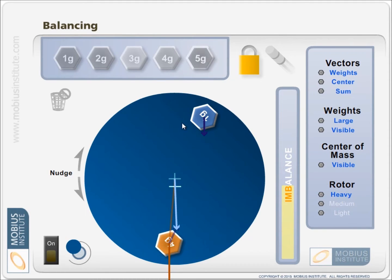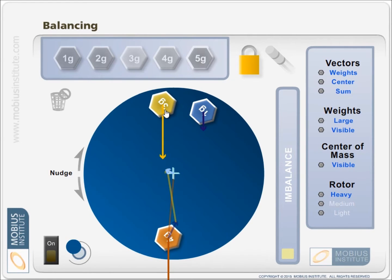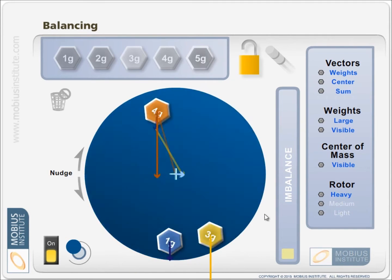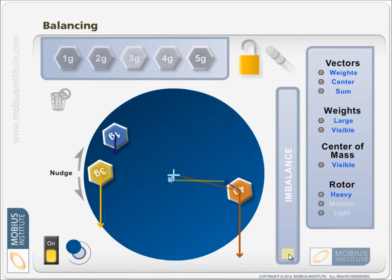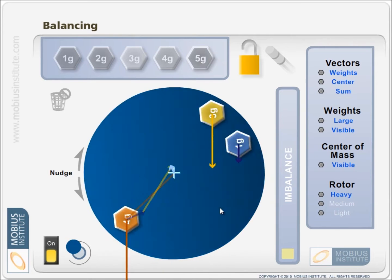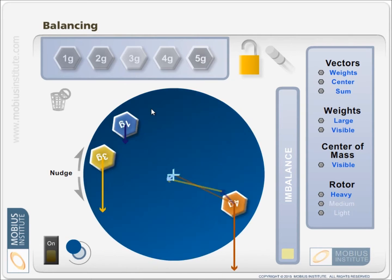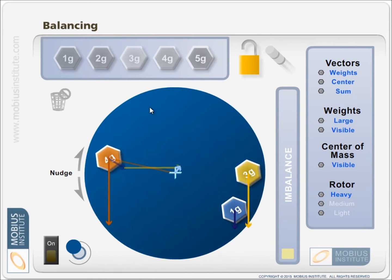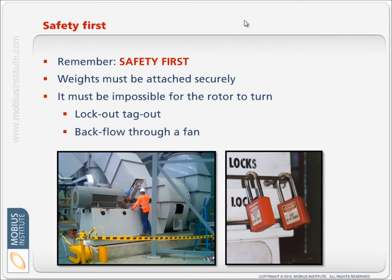Now at this point we can either take the trial weight off and add the final weight on or leave it on and add a weight that will do the job. So I am going to put that there because I can figure out what it needs to be just by looking at it. So now when I run the machine, you can see that the vibration levels are much lower now. We have come close to balancing this machine. You can still see a bit of wobble there and I will come back to this point in a moment of when is it satisfactorily balanced. But that is the basic process we are going to go through.